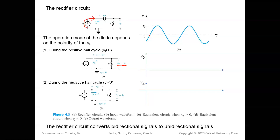We can plot the waveform during the positive half cycle: VO simply copies the waveform of VI.